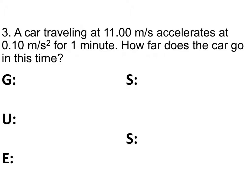A car traveling at 11.00 meters per second accelerates at 0.10 meters per second squared for one minute. How far does the car go in this time? What you're looking for is how far — how far is a distance or a displacement. So you look at your givens: what do you know? You've got 11.00 meters per second — the car is already going at that velocity, so that's your initial velocity, your vi.